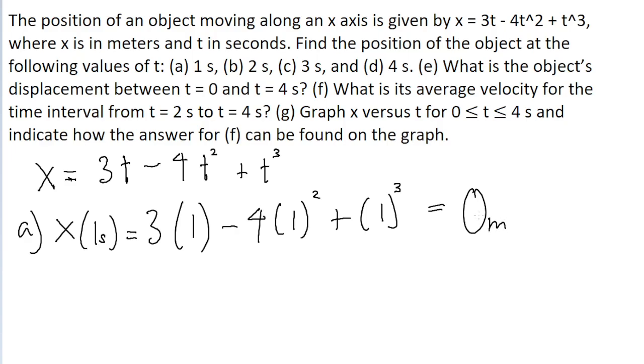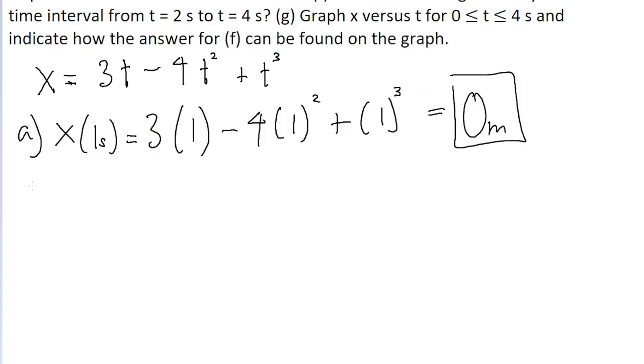The object is at a position of zero meters after one second. Now we'll go through parts B, C and D, which ask us to look at 2 seconds, 3 seconds and 4 seconds. Part B, we're looking at 2 seconds. So 3 times 2 minus 4 times 2 squared plus 2 cubed. We find a value of negative 2 meters.